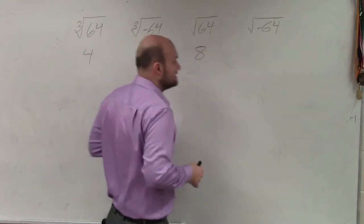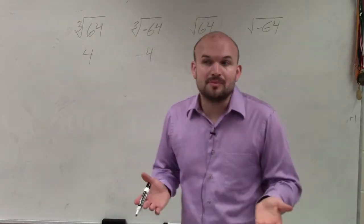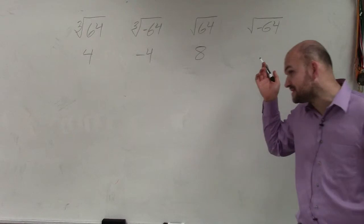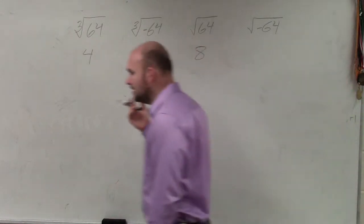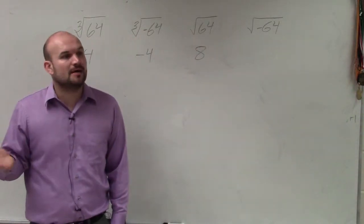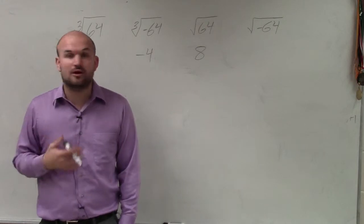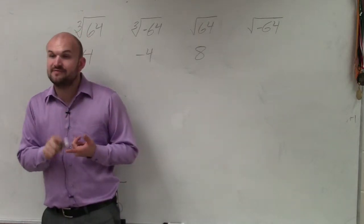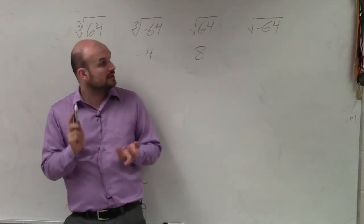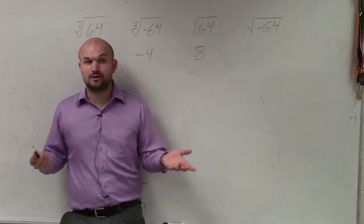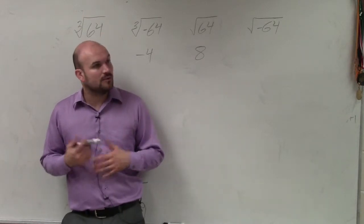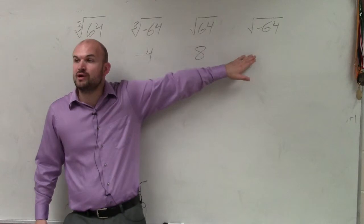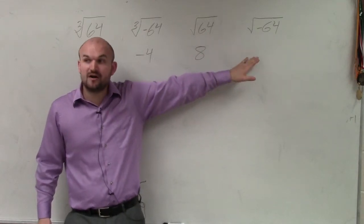However, we come into a problem when we want to do the square root of negative 64, because you can't multiply the number by itself to give you a negative 64. Because positive 8 times positive 8 is positive 64. Negative 8 times negative 8 is still positive 64. So unfortunately, we cannot take the square root or any even root of a negative number.